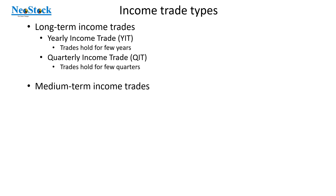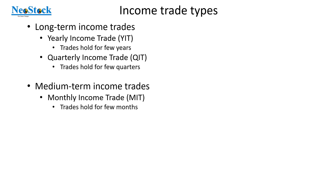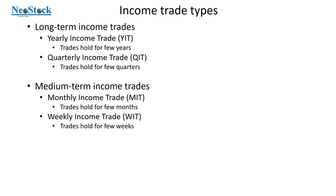The next one is medium term income trades. Under medium term income trades we have a few subtypes. One is monthly income trade, also called MIT, where trades hold for few months. If you place an order today, you will hold for few months until it reaches your target. And weekly income trade, in short WIT — these are trades that hold for few weeks until they reach their target.